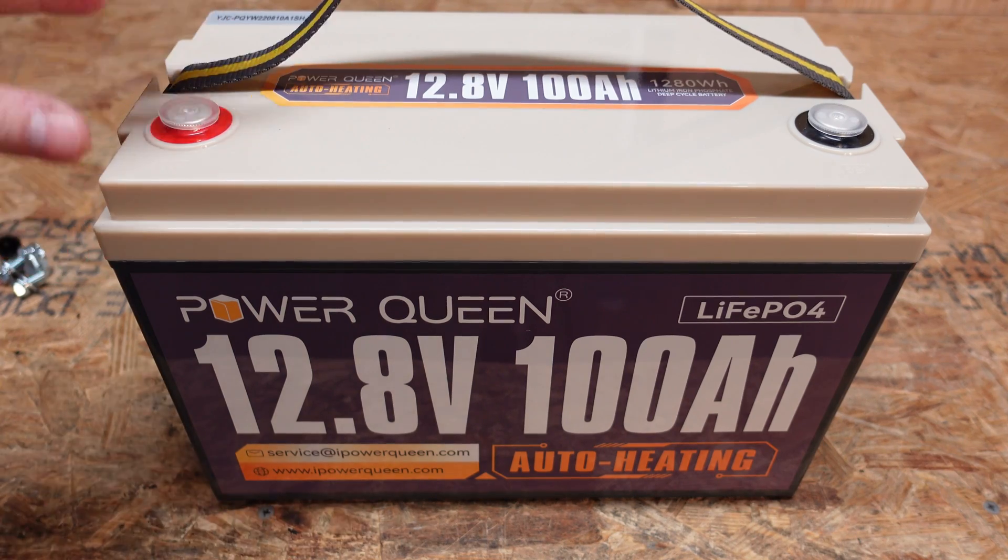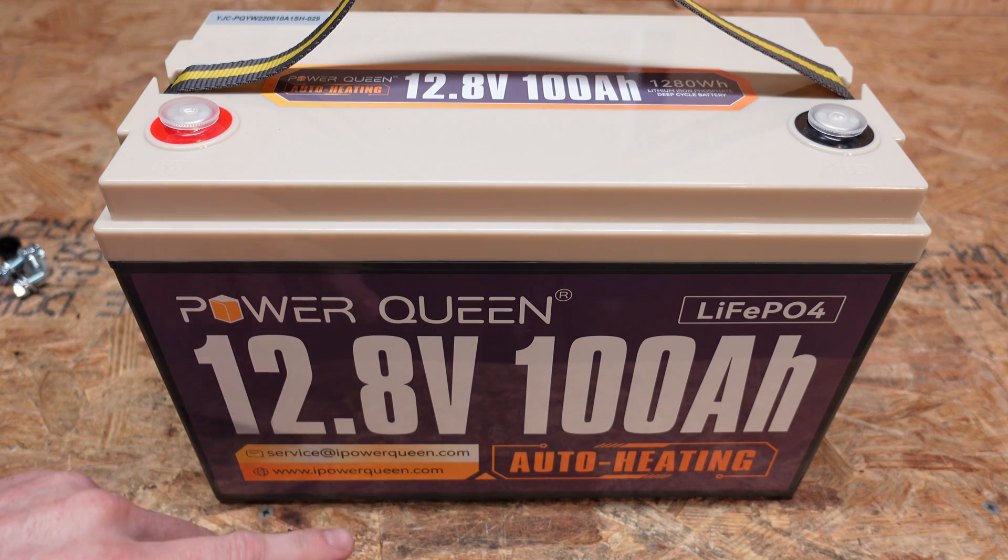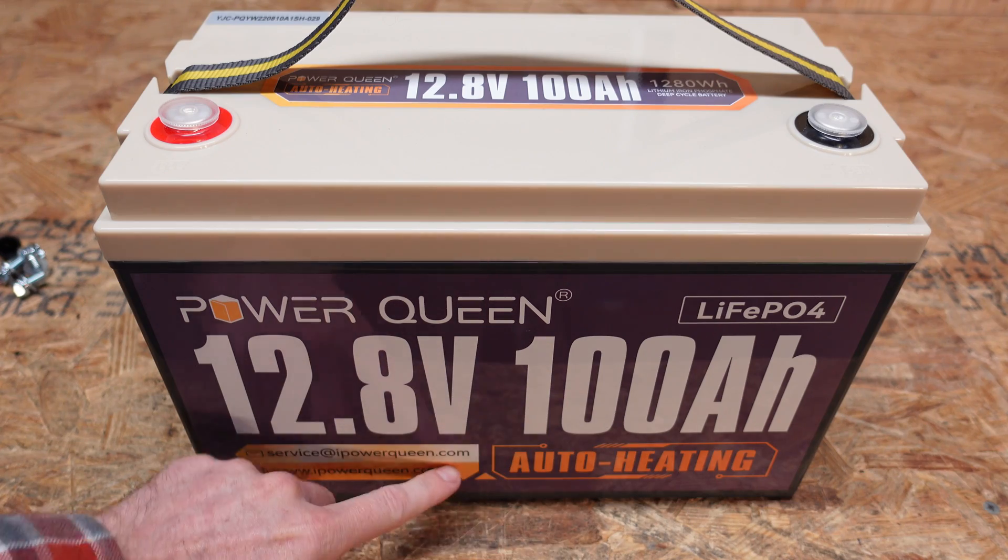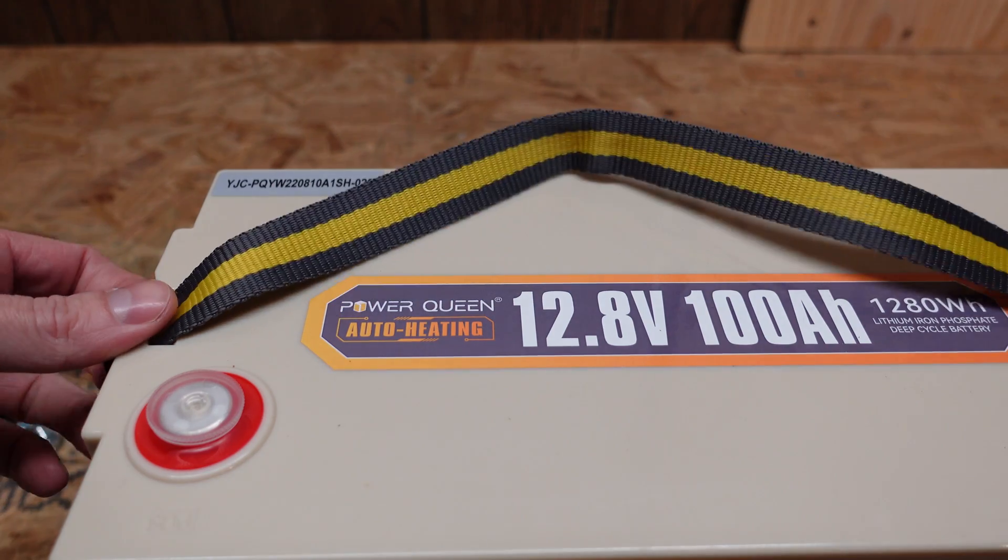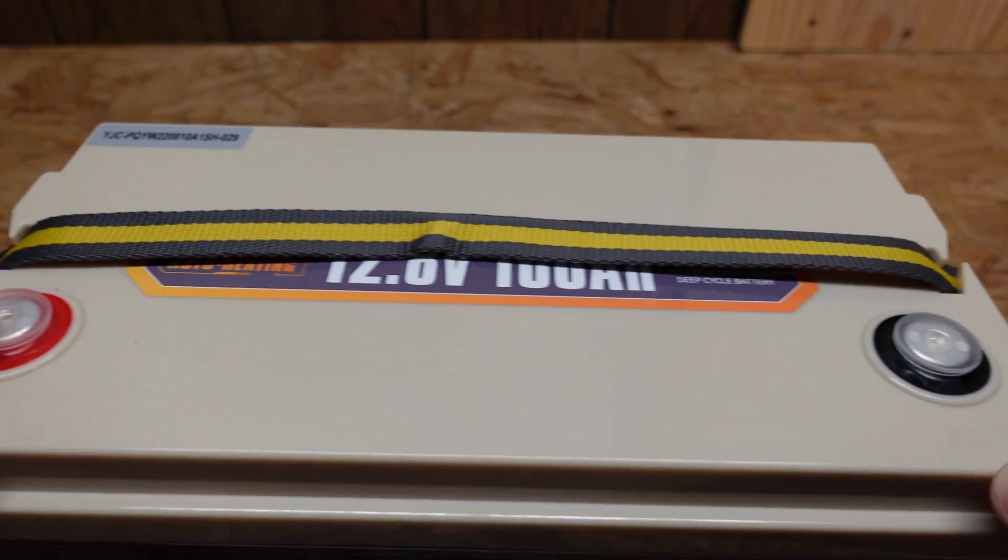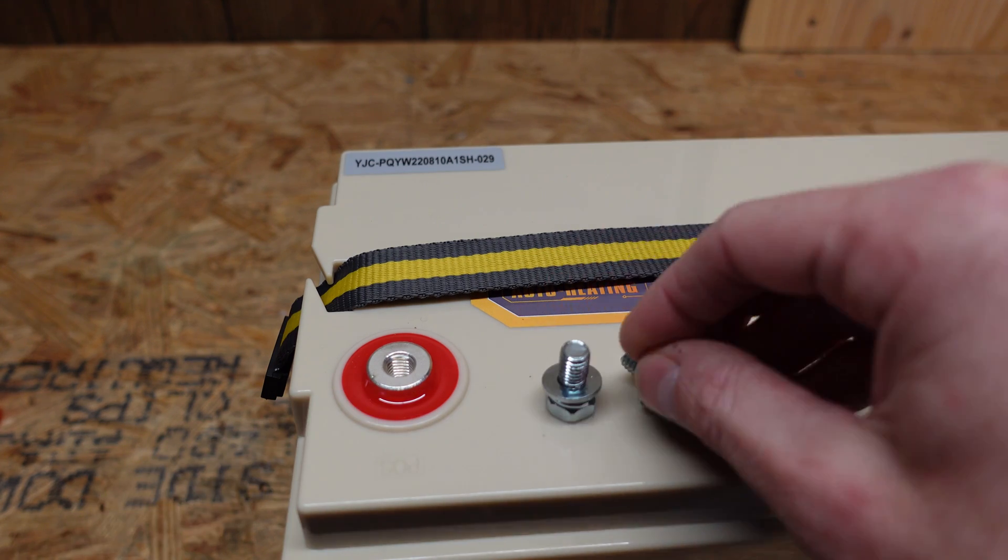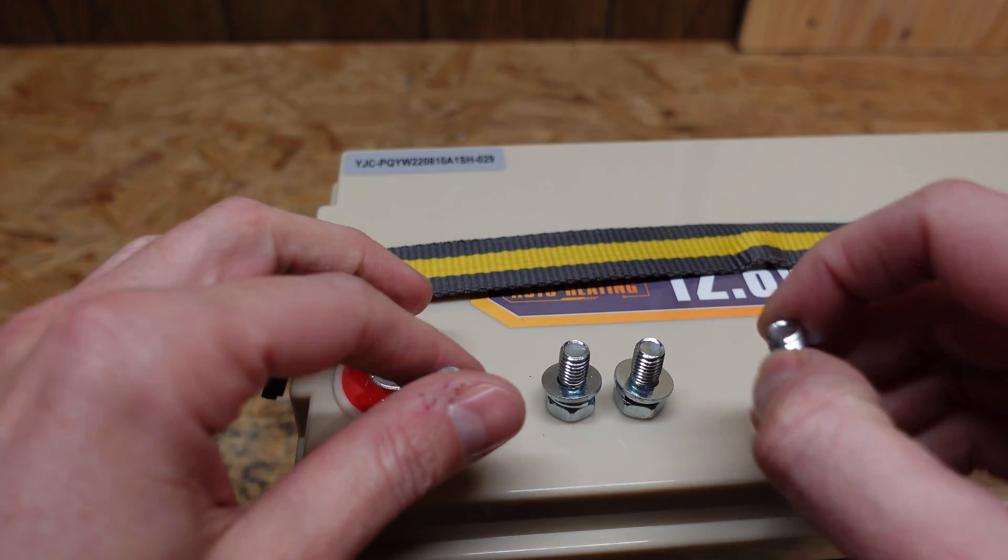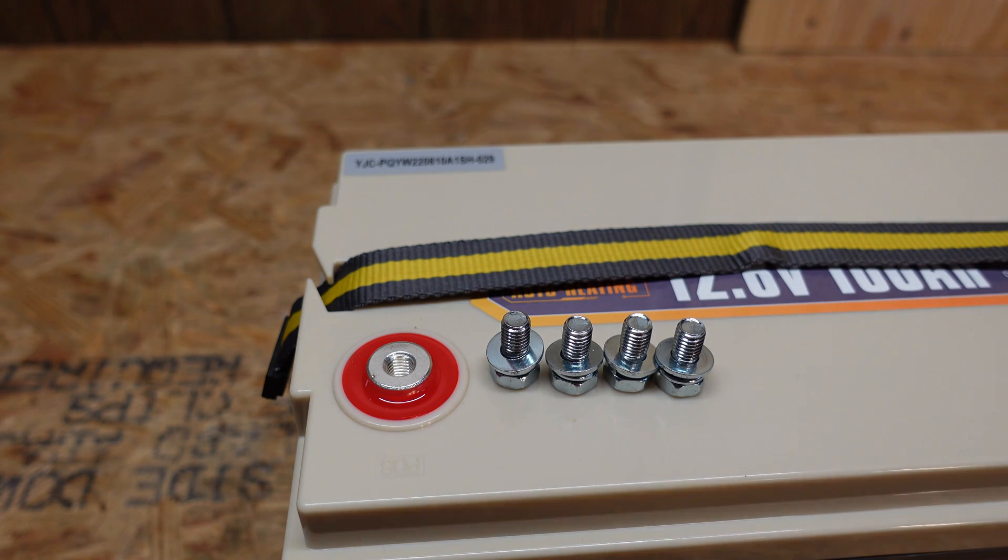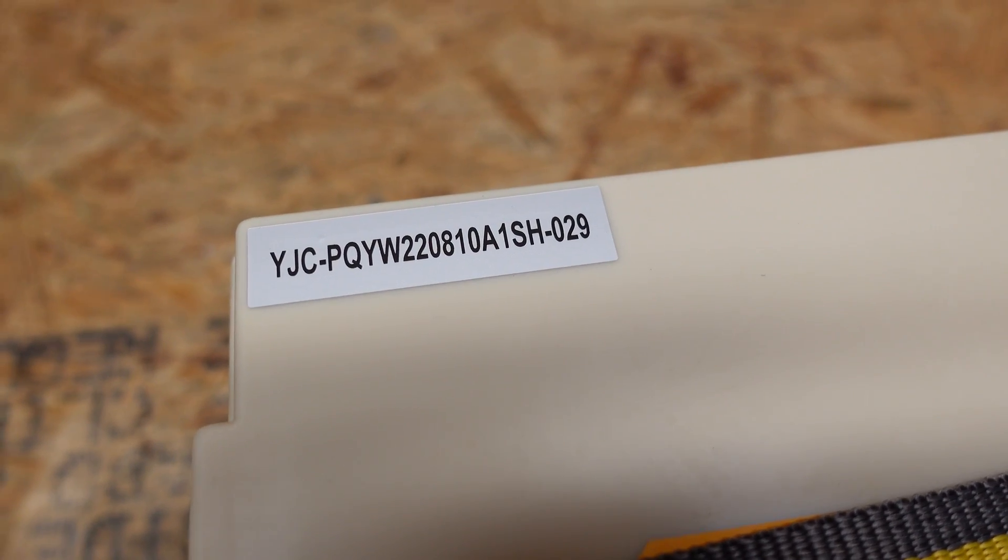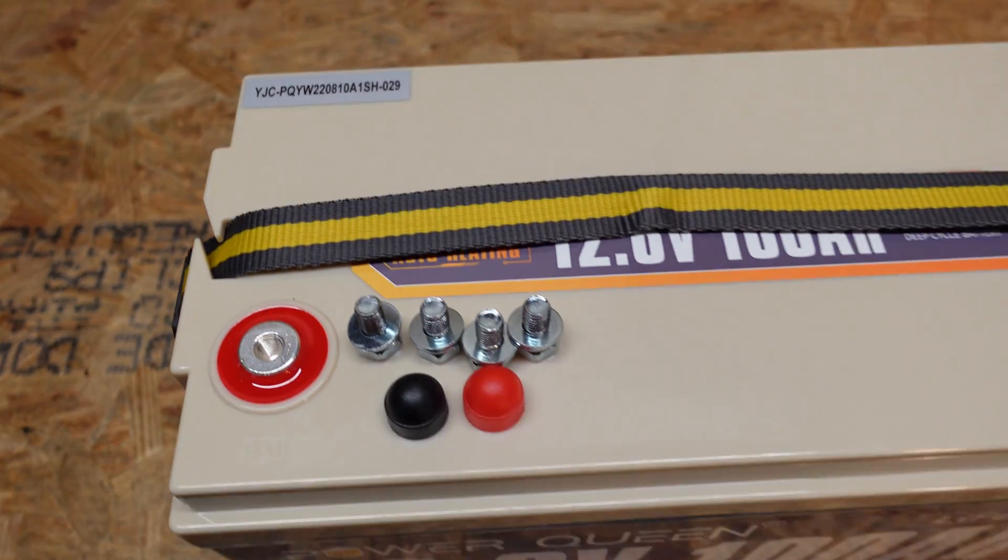This battery comes built in a very similar plastic case as many of the others we have seen on the market. 12.8 volts nominal 100 amp hours auto heating, lithium iron phosphate. We've got the nylon carry strap on the top, we've got our positive and our negative terminals and these are the standard epoxied in terminals and we received four bolts of the same size. Still haven't figured out why they do that but we do have four so it's good to have extra. And lastly we have what appears to be a serial number in the top left corner. Again very similar to some of the other batteries we have looked at.